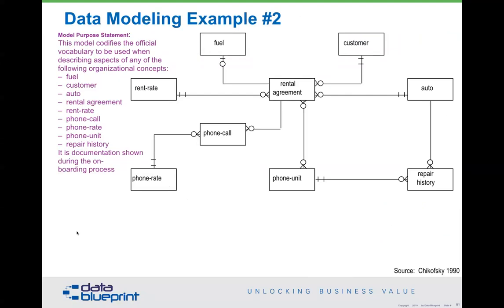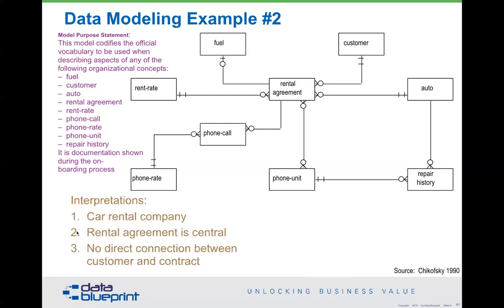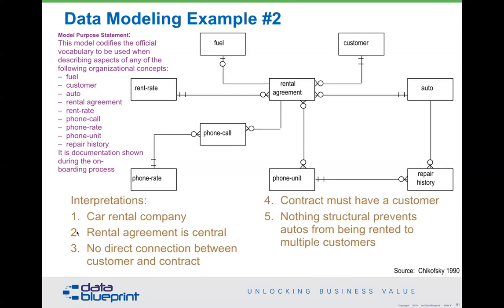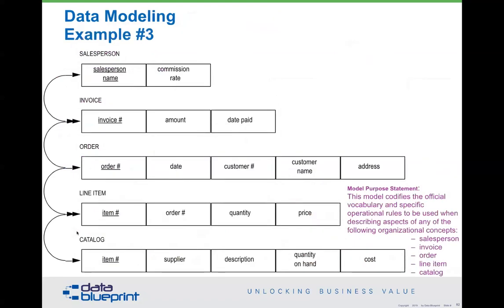The interpretations for the car rental model are pretty straightforward: the rental agreement is central, there's no direct connection between the customer and the contact, a contract must have a customer, there's nothing structural that prevents an auto from being rented to multiple customers — that was actually the problem we were solving — and phone units are tied to rentals, so if we don't have a rental, we can't be borrowing a phone. These are all business rules and concepts that are not typically understood without the documentation.